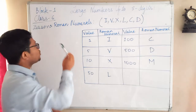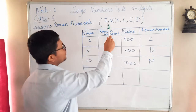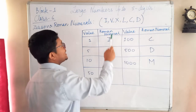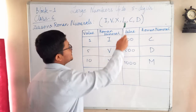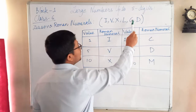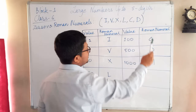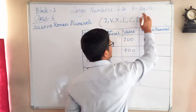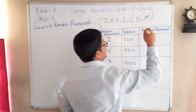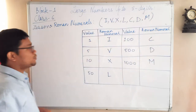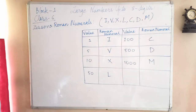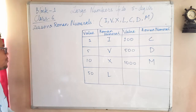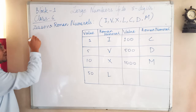So in Roman numerals, you just have to know what I, V, X, L, C, D, and M each stand for. I missed out M earlier, so let me write that also. You have to know only this much and you will be able to do most of the questions based on this topic.